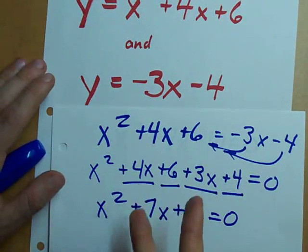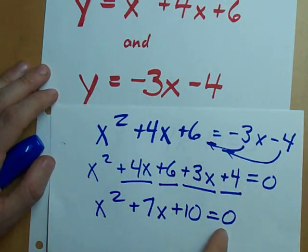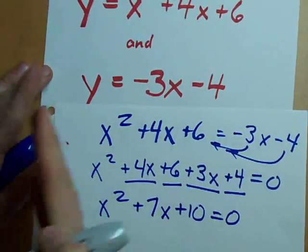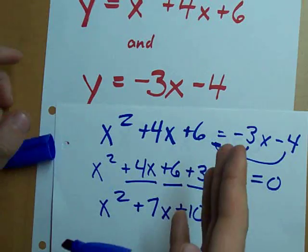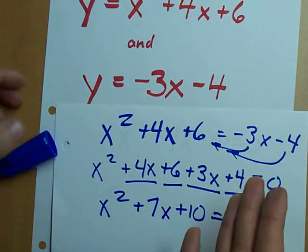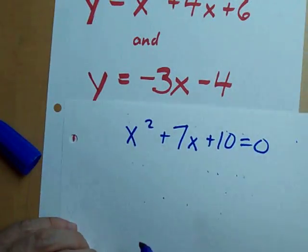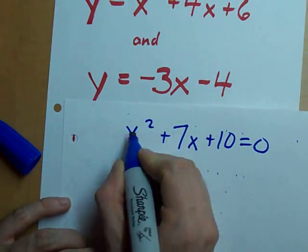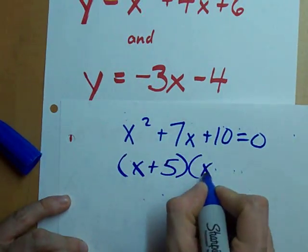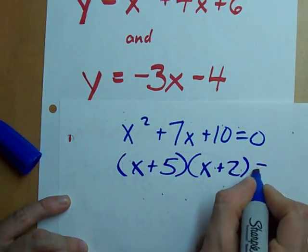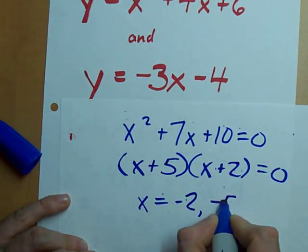Now, we've got two ways we can solve this. We can factor it or we can use the quadratic formula. If you use the quadratic formula, whatever the formula gives you, those are your answers for x. Those are just the x values. You can also choose to factor it. If you choose to factor it, let's factor this. Two numbers that multiply 10 and add to 7 turns into x plus 5 and x plus 2. Therefore, x is negative 2 and negative 5.